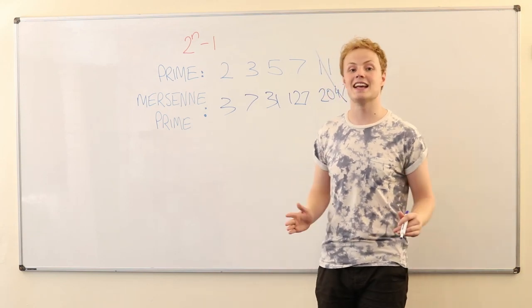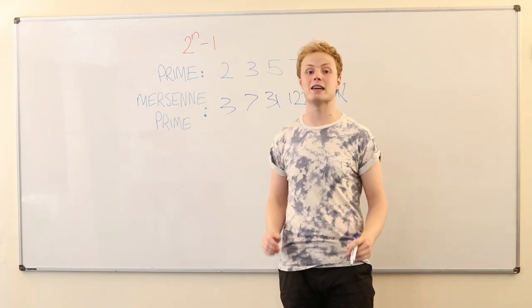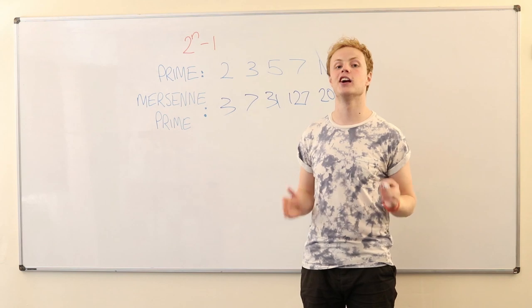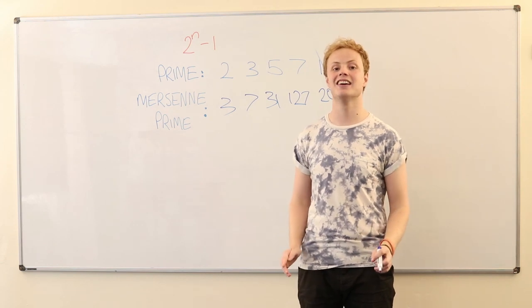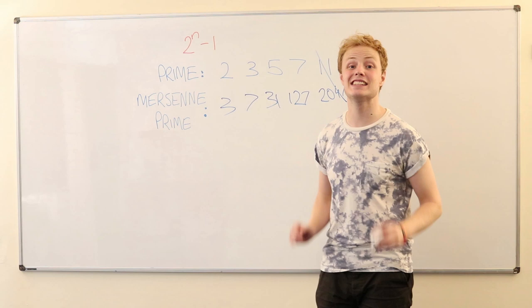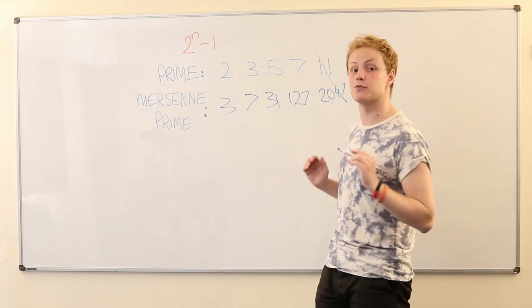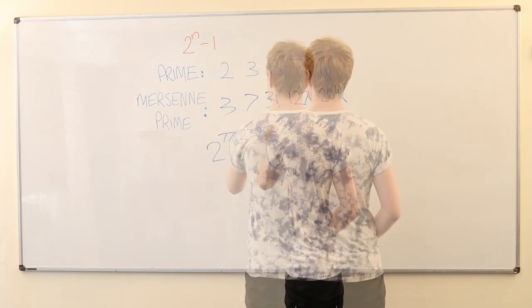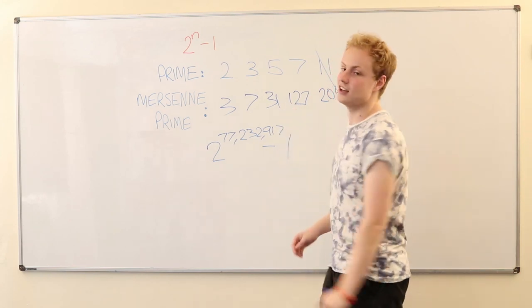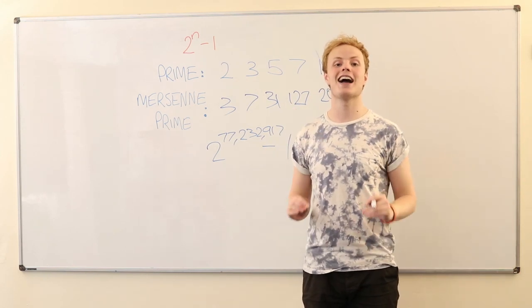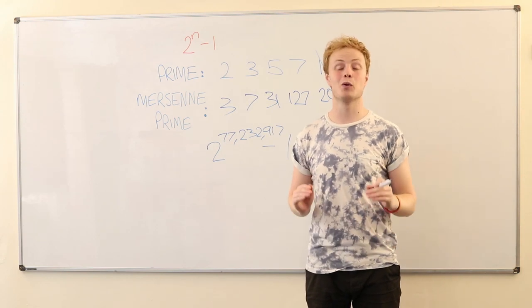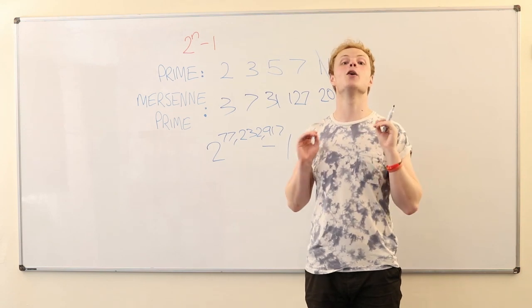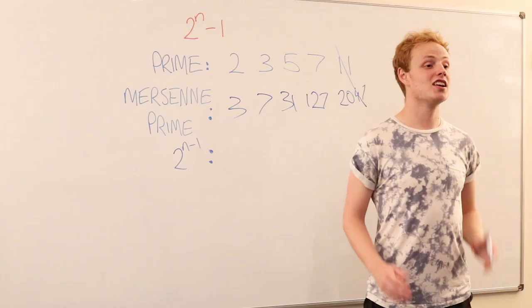One benefit of these Mersenne primes, however, is that among the prime numbers, they tend to be pretty big. So there's an ongoing competition in the maths community to try and find the largest prime number that they can, and so far, the largest one that's been found is a ridiculously big Mersenne prime. In fact, it's written like this, it's 2 to the power of 77 million and 17 minus 1. So it's an absolutely ginormous number, has over 23 million digits, which I calculated, if you write each digit the size of a grain of rice, it would take you absolutely ages to write it.